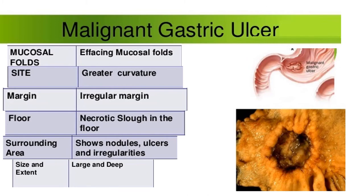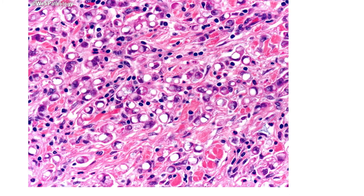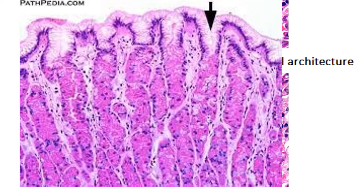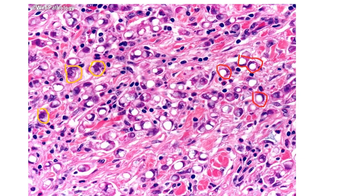When you examine the microscopic biopsy under the microscope, there is loss of normal architecture — no surface epithelium, no mucosal pits, and no mucosal glands, unlike the normal architecture we have seen. The first identification point is loss of normal architecture. You can also appreciate pleomorphism: there are cells with a high nuclear-to-cytoplasmic ratio and darker chromatin — these are malignant cells.